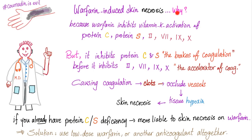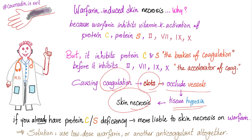Warfarin-induced skin necrosis: why does this happen? Because warfarin inhibits the vitamin K-dependent factors — protein C, protein S, and factors 2, 7, 9, and 10. However, warfarin inhibits protein C and S — the brakes — before it inhibits factors 2, 7, 9, and 10 — the accelerators. When you inhibit the brakes before the accelerator, you get more coagulation first. More clots occlude vessels, leading to tissue hypoxia, and skin cells die — that's skin necrosis, not apoptosis.